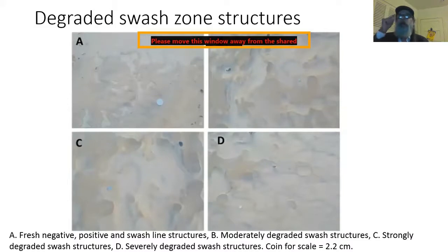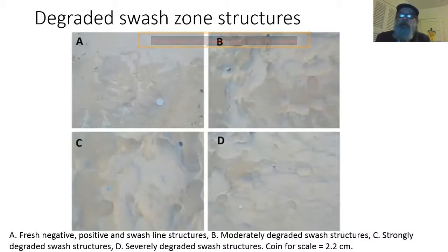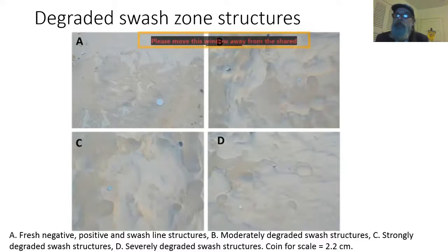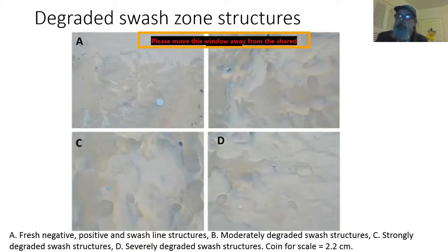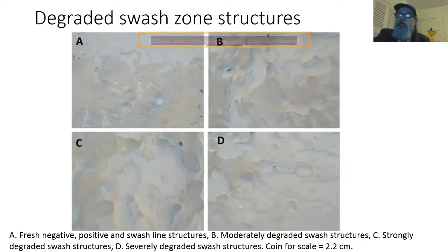And then there are degraded swash structures. In image A, there are fresh negative, positive, and swash line structures. Moving away in the same area of the beach, you go into moderately degraded swash structures in B, strongly degraded ones in C, and severely degraded ones in D. Fresh ones look quite sharp and clear. As they get more and more degraded, it becomes less and less obvious what their origin was.